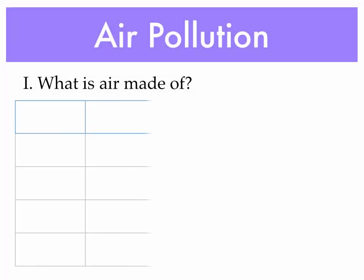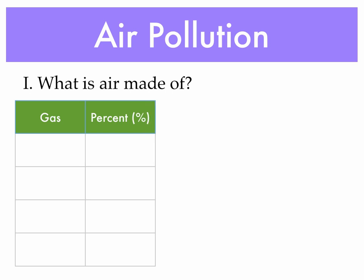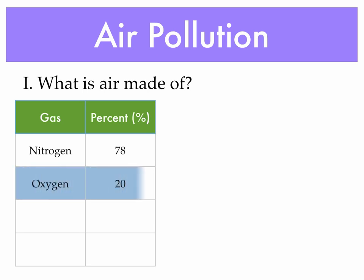Just a little bit of an introduction as to what the air is actually made of. The air is made up of various different gases, the largest of which is actually nitrogen, not oxygen. About 78% of the air is made of nitrogen, and oxygen is the second largest gas at about 20%. Argon is the third largest gas at only about 1%, and then all of the other gases — carbon dioxide, sulfur dioxide, methane, helium, hydrogen — actually make up 1% together.